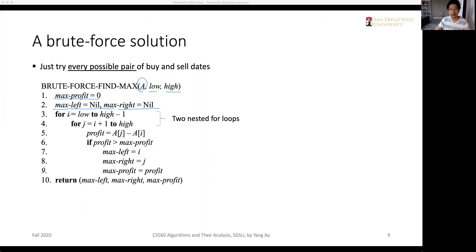So the outer for loop, the loop counter i indicates the buying dates. And in the inner for loop, the j indicates the sell date. So j is always next to, is always greater than i. So it iterates over from j plus one to high. And the profit is the difference between the two cells. If the profit is greater than the maximum profits, then we will record the maximum left, the maximum right, and the maximum profits. And finally, we'll return the solution.